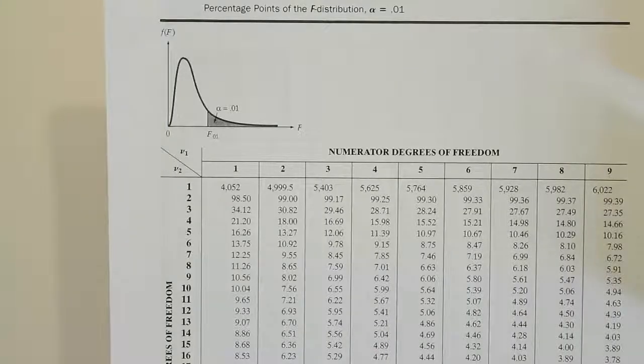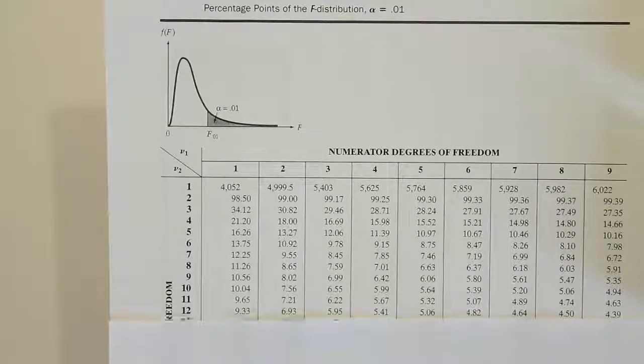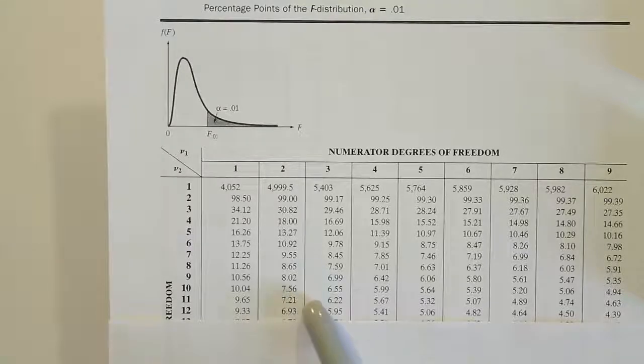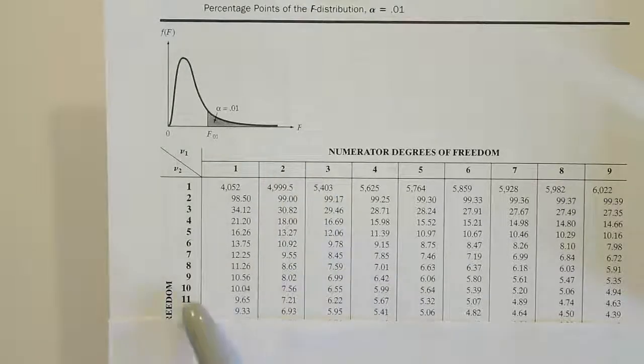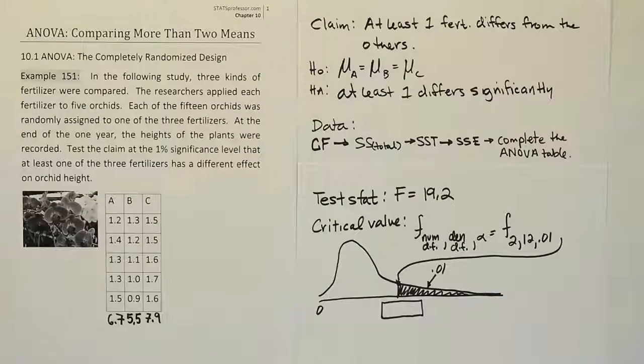So we're looking up 2, 12 on the 0.01 table, and when we isolate the 12 row and look in the 2 column, we find the answer is 6.93. So our degrees of freedom of 2 for the numerator and 12 for the denominator produces a critical value on the 0.01 table of 6.93. So our critical value from the table is 6.93.